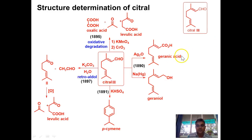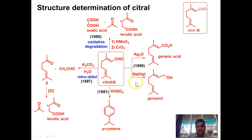Once the structure was proved, the actual products from the reactions were confirmed. Treatment with silver oxide gives geranic acid — the same number of carbon atoms. Reduction with sodium amalgam gives the primary alcohol geraniol (1890). In 1891 the skeleton clue about para-cymene formation was obtained. In 1895 the positions of the two double bonds were proved by KMnO4/CrO3 oxidation. Oxidative degradation in 1897 gave methyl heptanone, and ozonolysis of methyl heptanone gave levulinic acid, consistent with the direct degradation of citral.